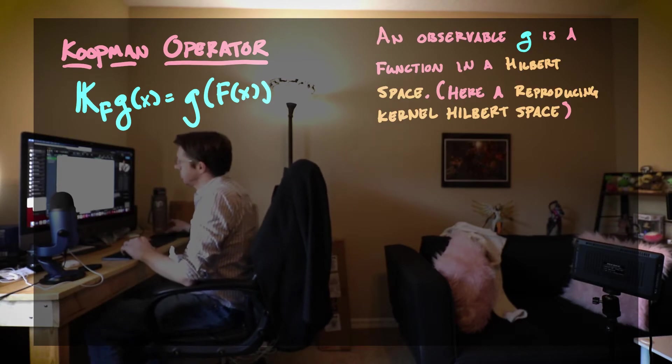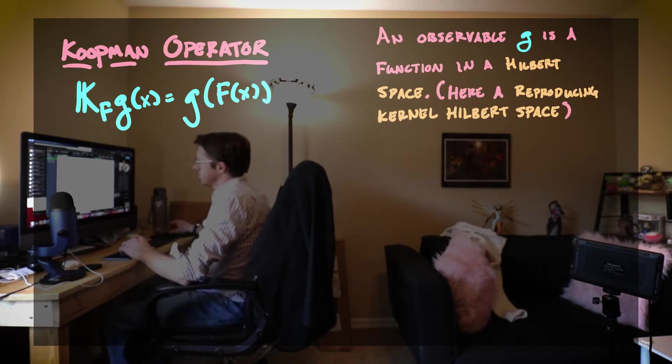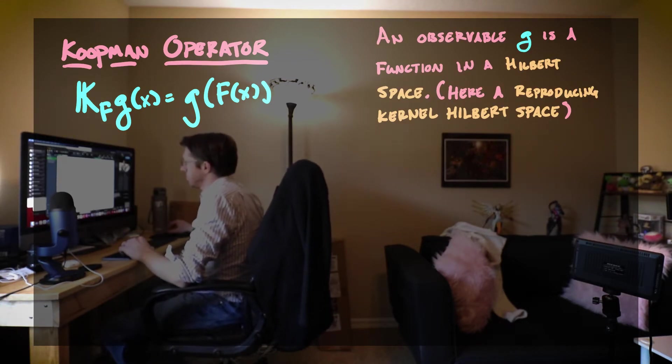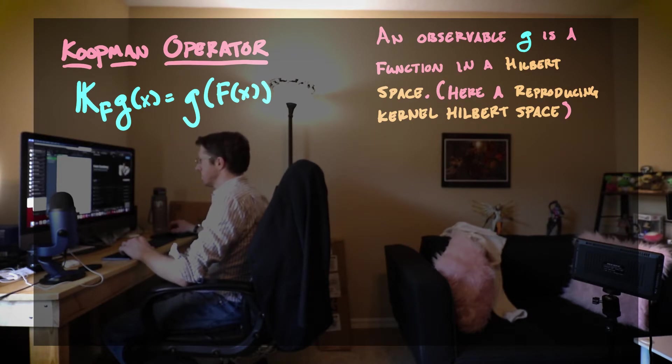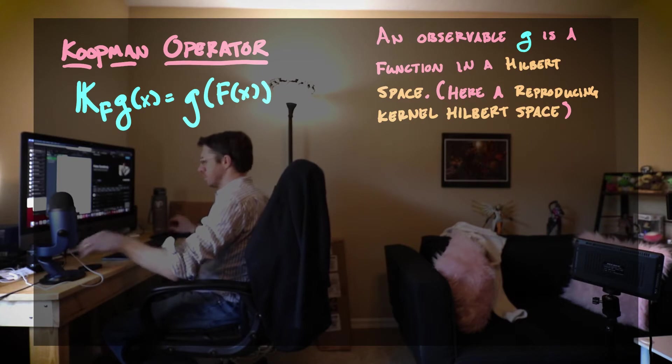So again we're assuming our system is discrete time. And we're going to take a look at it through the guise of what are called observables. Observables are members of a Hilbert space of functions, and we're going to assume that this Hilbert space of functions is a reproducing kernel Hilbert space.